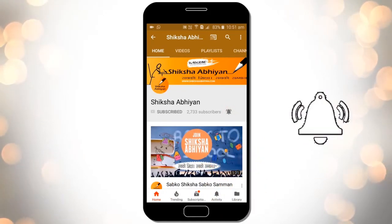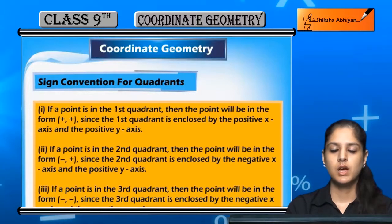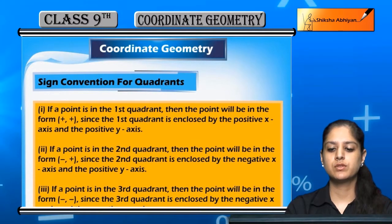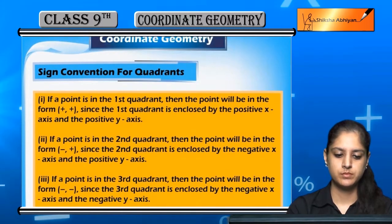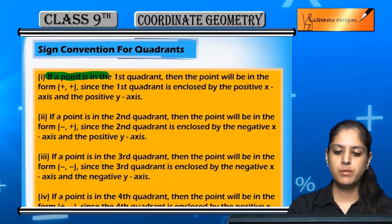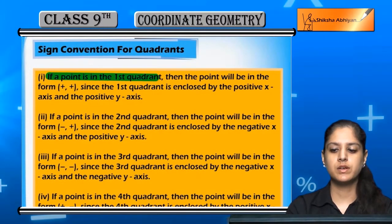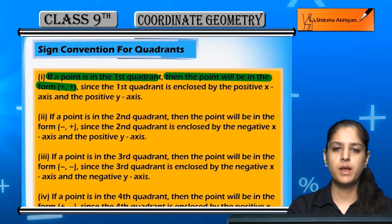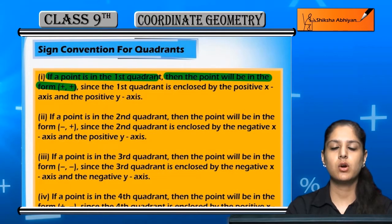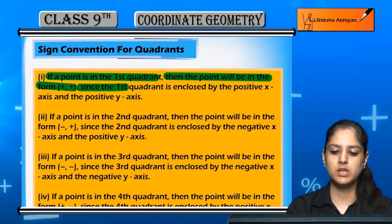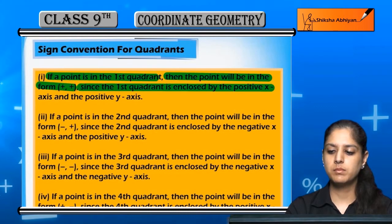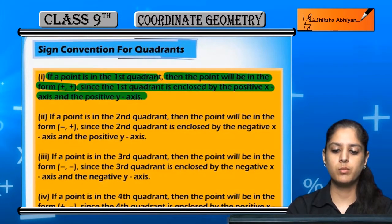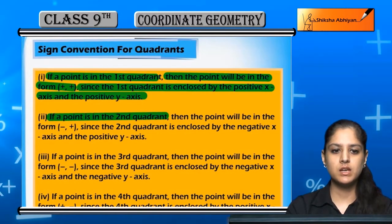A popular topic is sign convention for quadrants. Now if a point is in the first quadrant, then the point will be in the form (+, +), meaning both x and y are positive. In the first quadrant, the x-axis is positive and the y-axis is also positive.